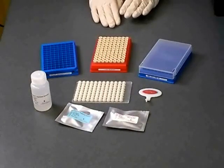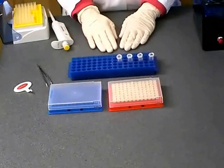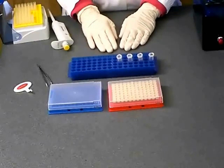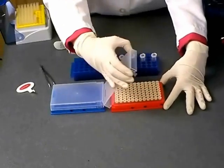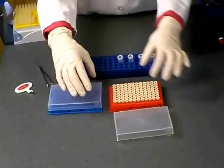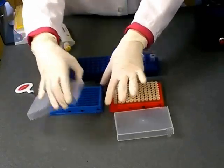To begin, remove the lid from the rack of Gentegra tubes by squeezing the corner tabs and the lid from your working rack. The working rack is used to apply sample to your Gentegra tubes without contaminating your remaining unused Gentegra tubes.